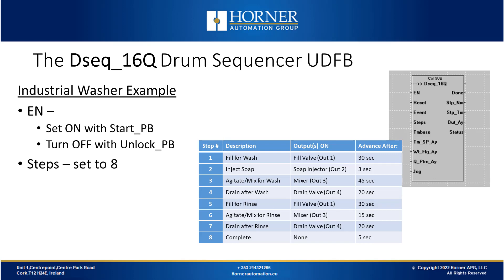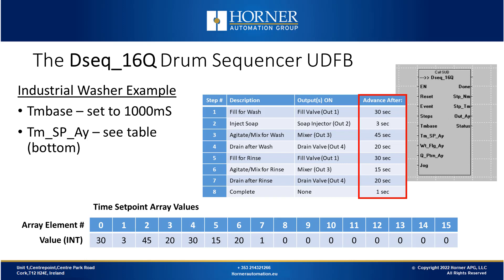We'll start with the enable input — we want to kick off the sequence when the start button is pressed. So we write ladder logic to turn the enable bit on with the start button and turn it off when the unlock push button is pressed. We set the number of steps to eight, the time base to 1000 milliseconds, and then we take the table showing timeouts for each step and turn that into a timer setpoint array. The first element is the timeout for step one through to step eight, and because we're not using steps beyond eight we zero-fill the remainder of that array.